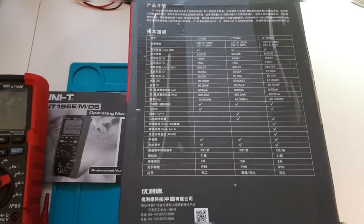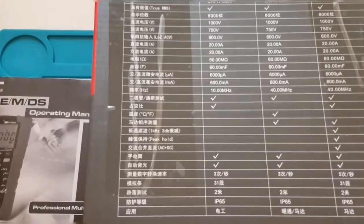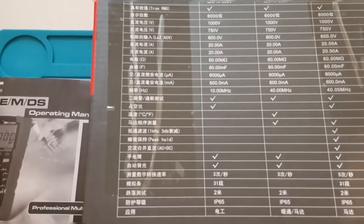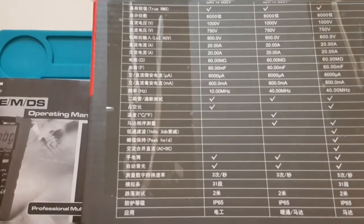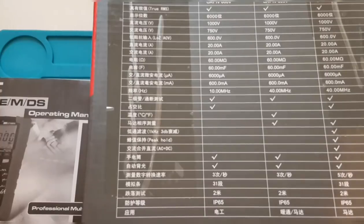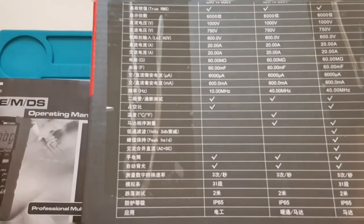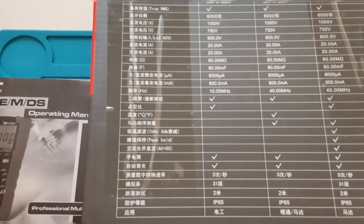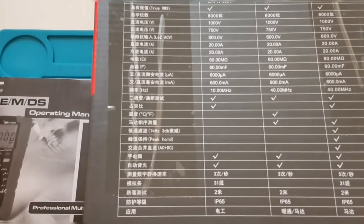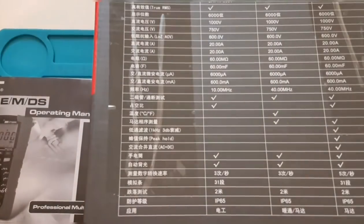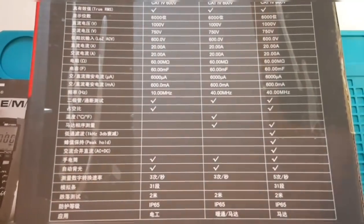Speaking of specs, you can see they are quite similar. They all have the 60 millifarad range, 60 megaohm range, the 20 amp range, and the 6,000 count. As I said earlier, the only big difference is the UT195DS, which has the dual display. They do have a higher frequency with the 195M and the 195DS as well. The refresh rate is slightly higher on the 195DS, but in terms of actual specs, they're not that far off.